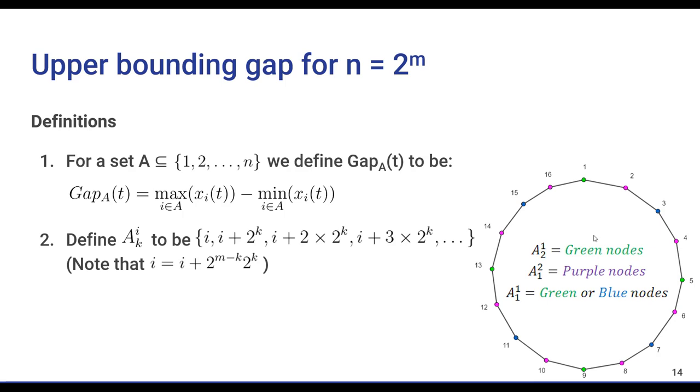We start with a couple of definitions. First, we define gap of A, where A is a subset of 1 to n, to be the gap if only considering nodes whose indices are in A. And second, we define A(k,i) to be the nodes which we will go through if we start from node i and jump around with a step size of 2 to the power of k.